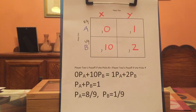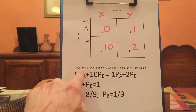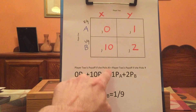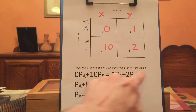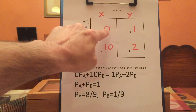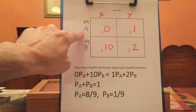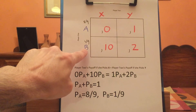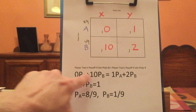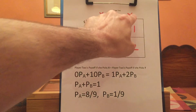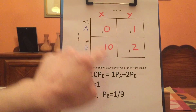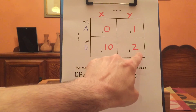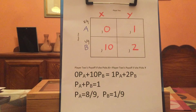Let's consider this game. Now I've written the payoffs for player two. For player two to randomize, I need player two to get the same payoff if she picks X as if she picks Y. If player two picks X, she gets zero times the probability that A is played, plus ten times the probability that B is played. If she picks Y, she gets one times the probability that A is played and two times the probability that B is played.